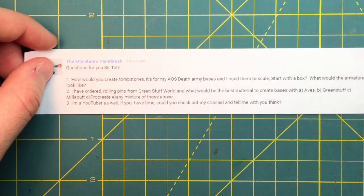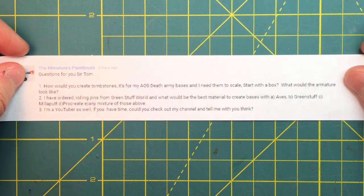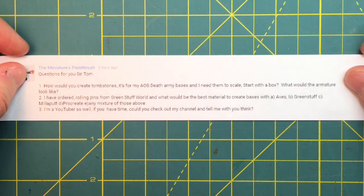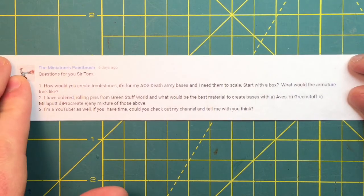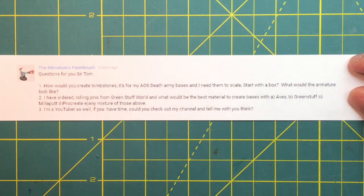This first set of questions comes from The Miniatures Paintbrush. I want to say thank you for your patience because this was asked a while ago but got lost in the spam filter. First question: How would you create tombstones for my Age of Sigmar death army bases? I need them to scale. Start with a box, what would the armature look like?